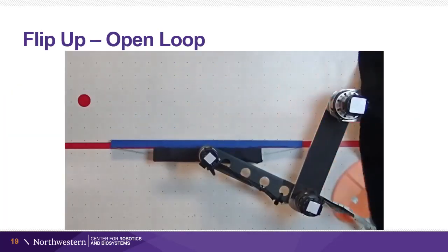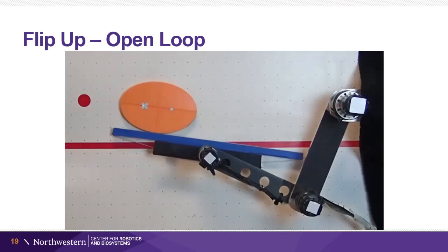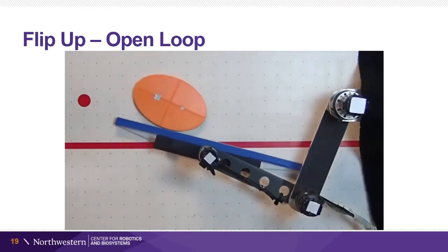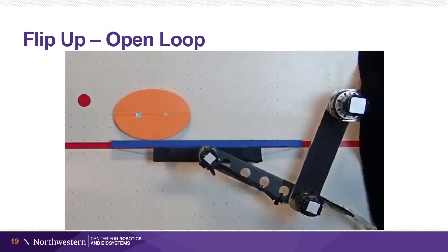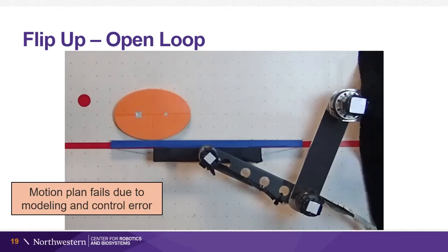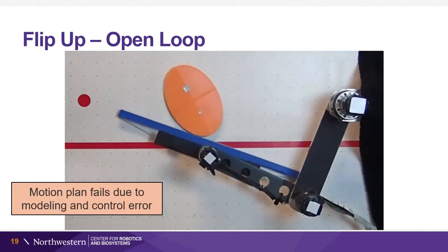This shows an open-loop execution of a planned flip-up trajectory. If the experiment matched the simulation, the object would have zero velocity when it reaches the vertical orientation. Instead, the object rolls past the equilibrium and falls. This motion plan fails due to modeling and control error.